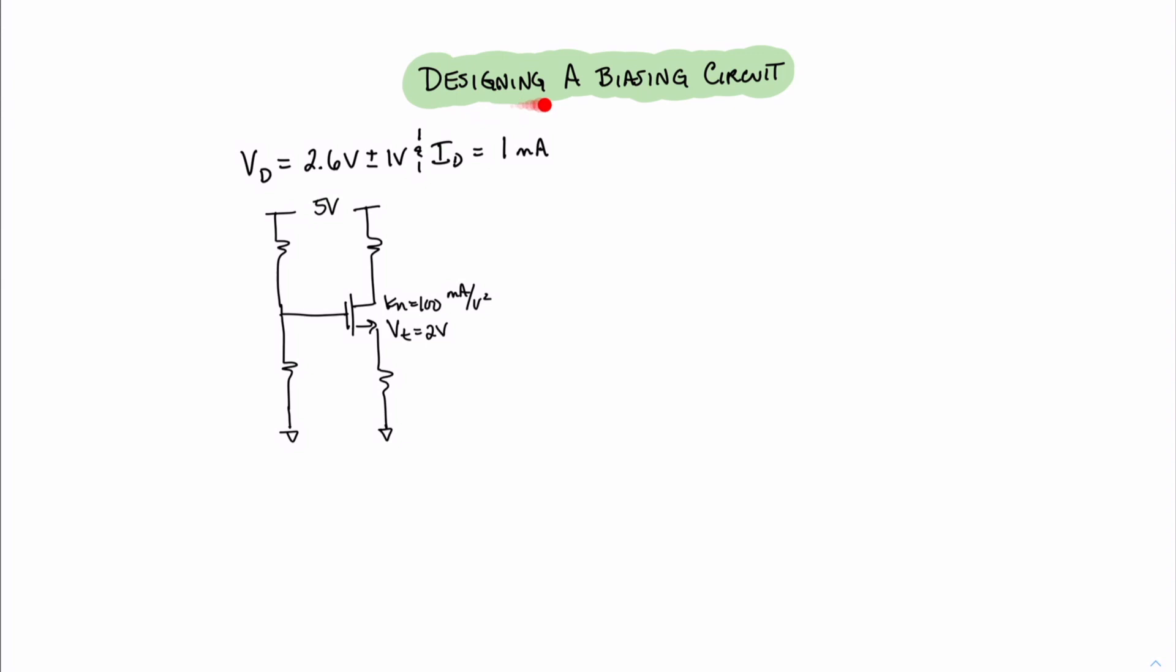Now let's take a look at designing a biasing circuit. In this circuit, we're given some parameters that we must obey. First, we're given that VD must be 2.6 volts, and it will have a variance of 1 volt plus or minus. We're also given that we must produce a drain current of about 1 milliamp. Since we know that the voltage at VD is 2.6 volts, we can easily use an Ohm's Law equation to find the resistance of the drain. We say that RD equals 5 volts minus 2.6 volts divided by 1 milliamp, which gives us a value of 2.4 kiloohms.